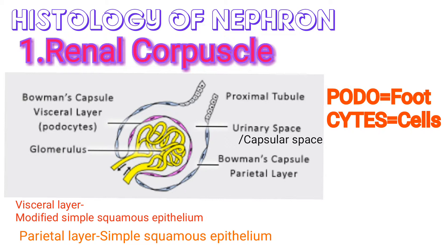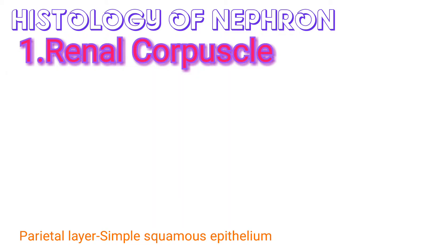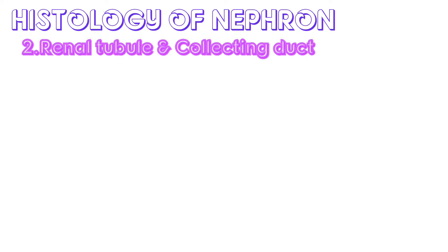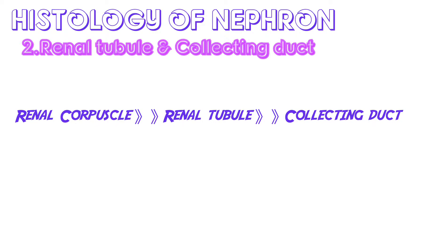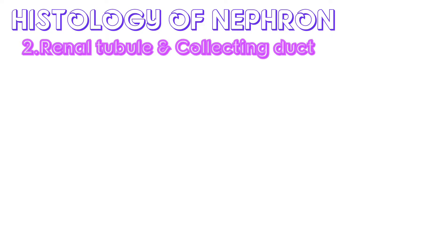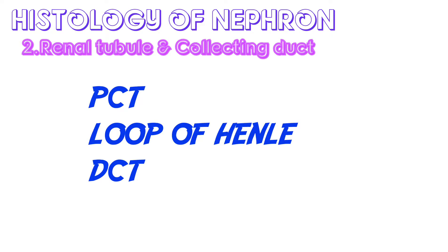The space between the two layers is called the capsular space, where fluid filtered from the glomerular capillaries enters. The renal corpuscle continues as a tubular structure called the renal tubule and opens into the collecting tubule. The renal tubule has three parts: the proximal convoluted tubule, the loop of Henle, and the distal convoluted tubule.